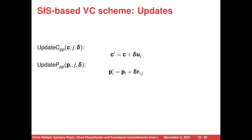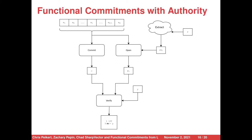Moving on to functional commitments with authority. This looks very much like the standard functional commitment diagram, except the authority that generated the public parameters remains online permanently. In order to use open, you must first get an opening key from extract. This opening key is public — you can imagine it being on a public bulletin board — and it is also reusable.